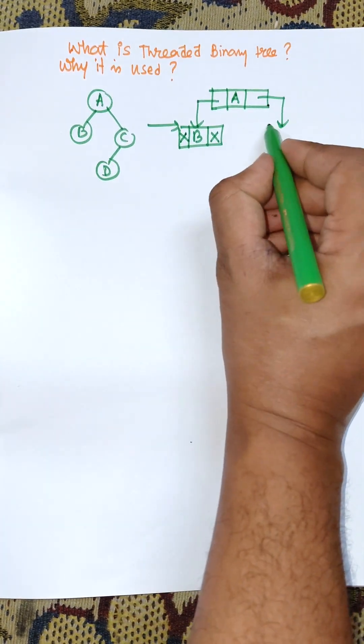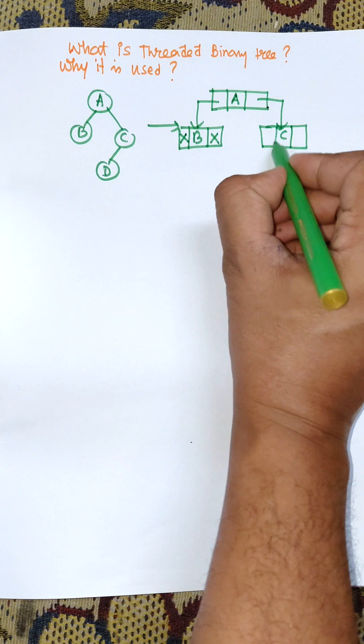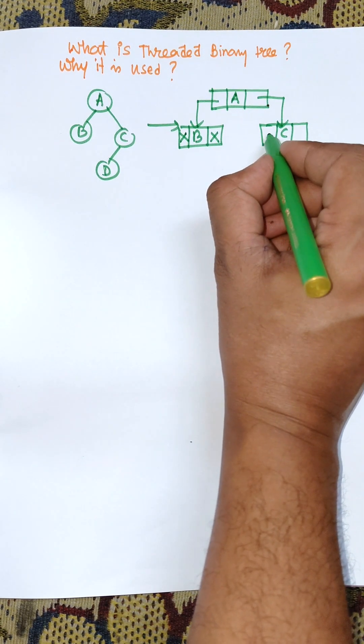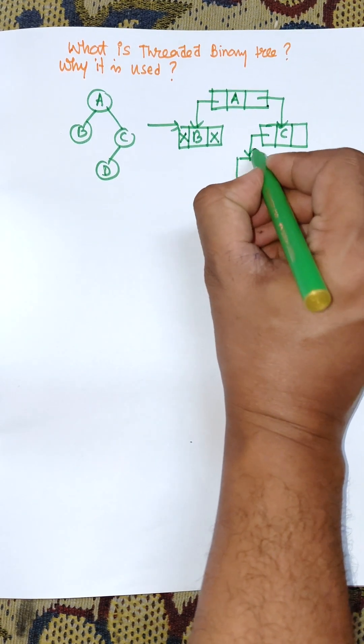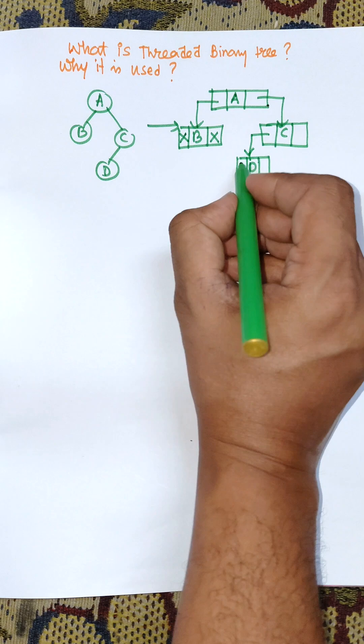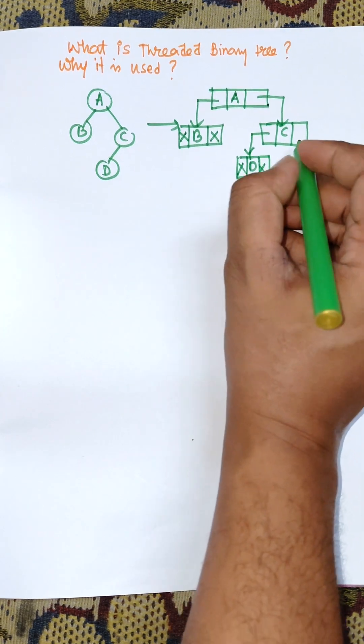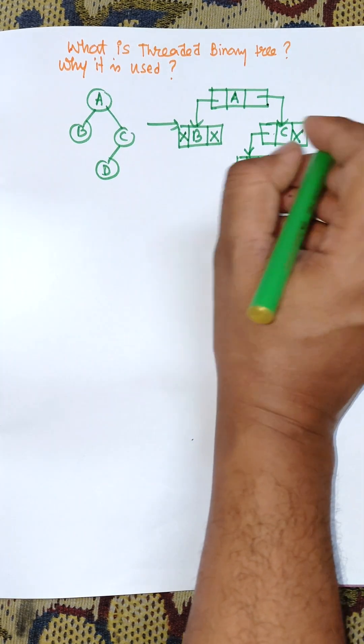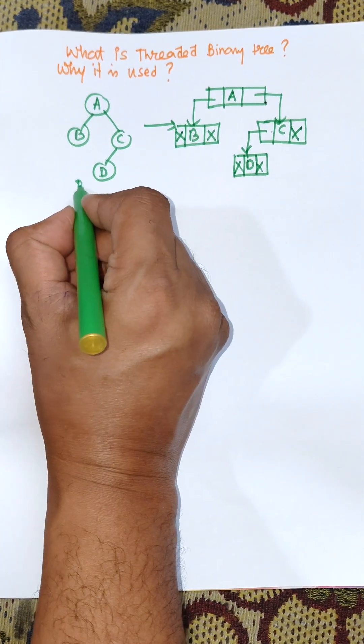And next one is right pointer, this is C. Here left pointer consists of D, and D's left pointer is null, right pointer is null. Right pointer of C is also null. Here this is the binary tree and this is linked list presentation of binary tree.